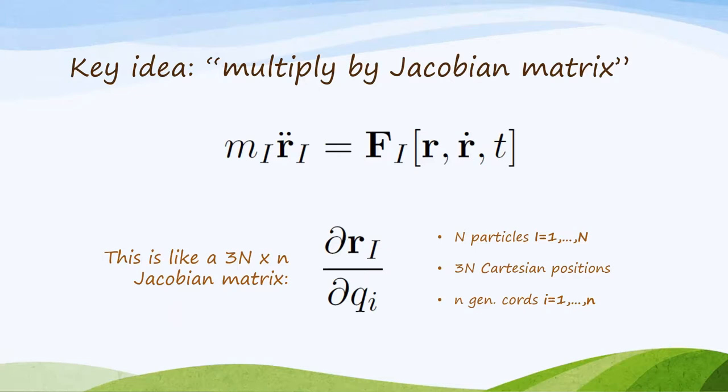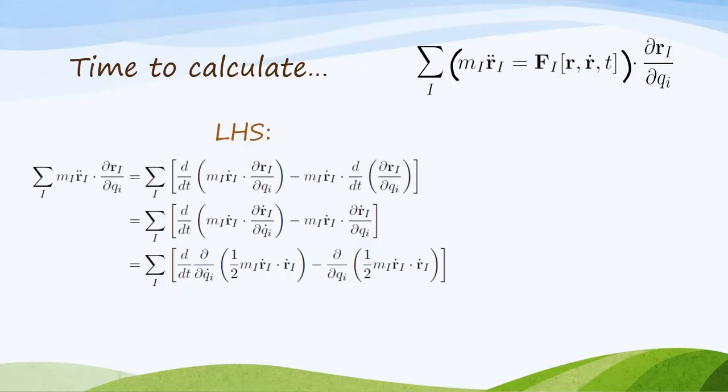So to change the basis of this equation, we matrix multiply, which means we sum over capital I, and we take the dot product, so that we're doing a big matrix multiplication involving all 3n coordinates.